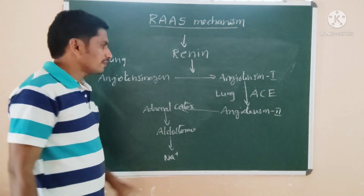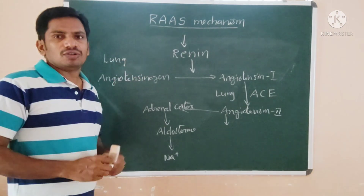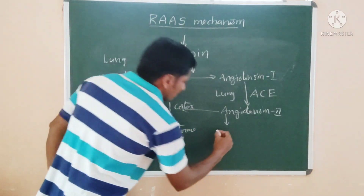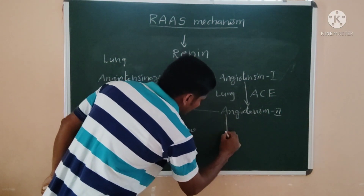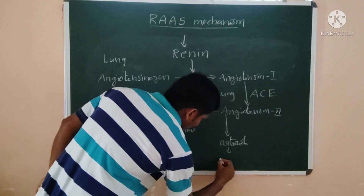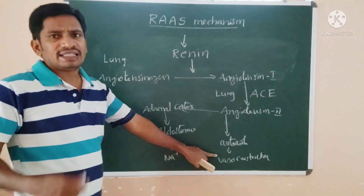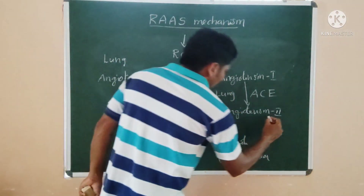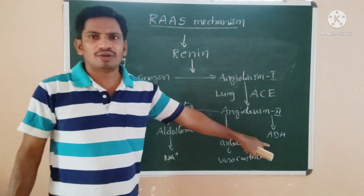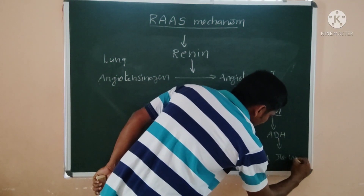Next, angiotensin 2 acts on the arterioles to cause vasoconstriction. When blood pressure is decreased, this vasoconstriction helps to rectify that problem. Additionally, angiotensin 2 acts on ADH — anti-diuretic hormone, also known as vasopressin — which promotes reabsorption of water, helping to restore blood volume.